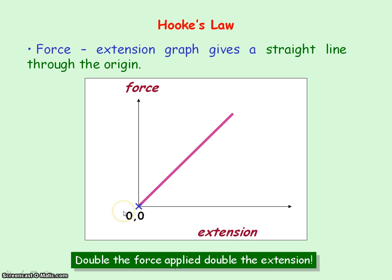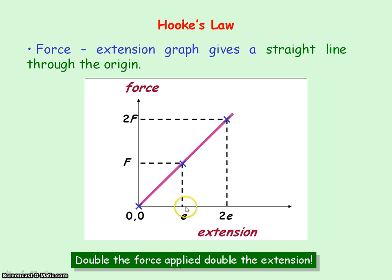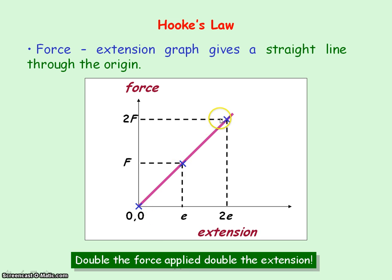For zero force, you would have zero extension. For force F, you'd have an extension E. And if you double the force to 2F, you would double the extension and have 2E. These three points give you a straight line through the origin, showing the directly proportional relationship.